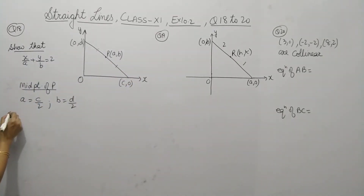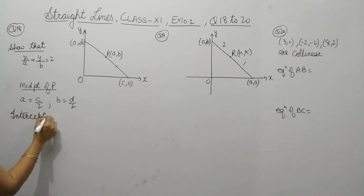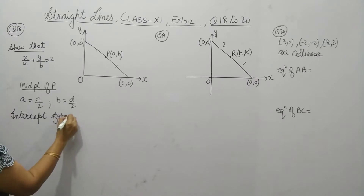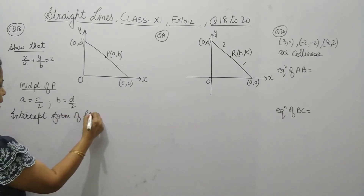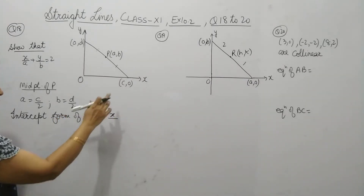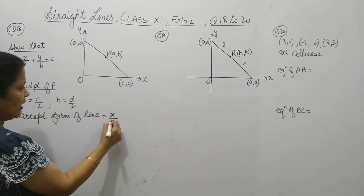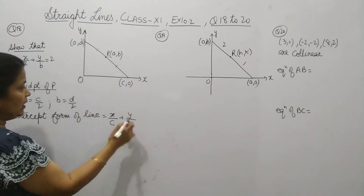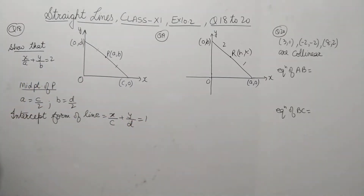Now the intercept form. What should the intercept form be? It should be x upon c plus y upon d equals 1 — instead of a you take c.